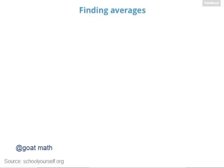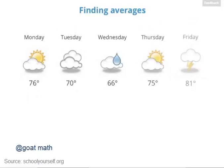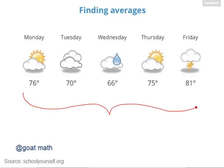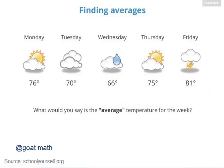Here we'll explore averages of numbers. Suppose you look up the weather for the coming week, and the temperatures are expected to be 76, 70, 66, 75, and 81 degrees Fahrenheit. You can think of the average as being the typical number out of this group, somewhere in the middle of all these temperatures. What would you say is the average temperature for this week?